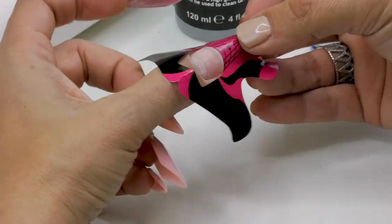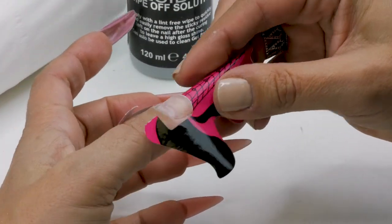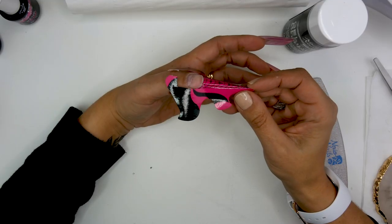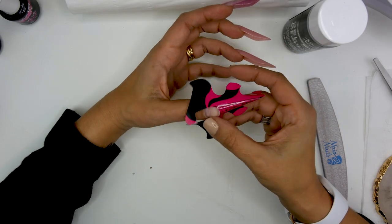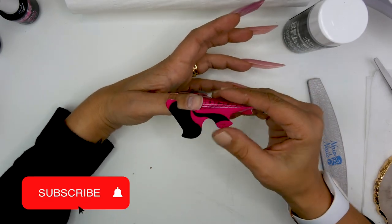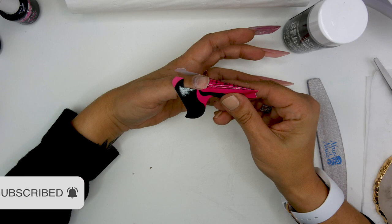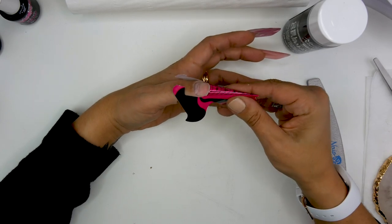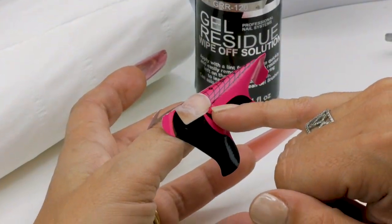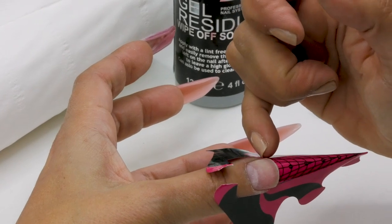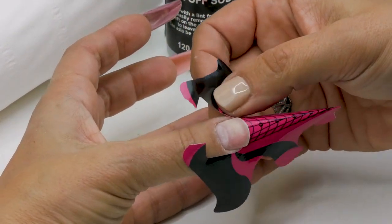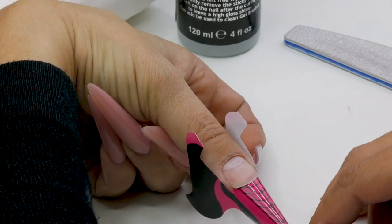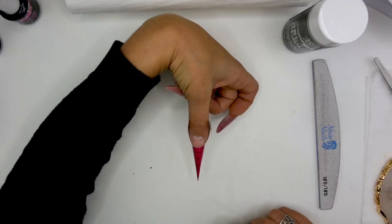As I'm going to do a stiletto shape, I'm going to pull down a little bit the form. And I will cut just the paper here to release the skin. Place the form underneath the free edge.